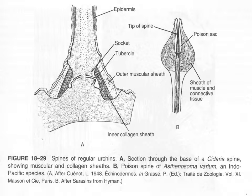Here's a close-up of a spine — you can see on the left image a tubercle and the spine above it. You generally don't find the spines attached to dead urchin shells because they're connected only by connective tissue and musculature, which is all soft tissue that rots away. It's very much like a ball-and-socket joint — the tubercle and the spine — and you can see the poison sack on the right-hand side, though not all urchins have poison sacks.